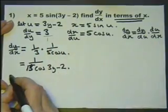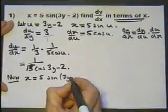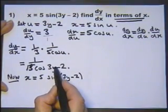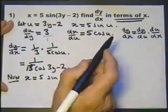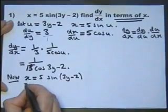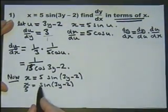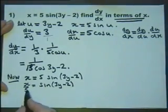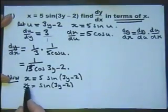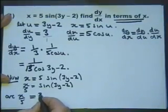We know that x equals 5 sine of 3y minus 2. We need to substitute for y something in terms of x to get our answer in terms of x — in other words we've got to make y the subject of this equation. Let's start by dividing both sides by 5. Now we need to do the inverse sine of both sides — the inverse sine of x over 5, also called arc sine. If we do the inverse sine of both sides, on this side we get arc sine of x over 5, and the inverse sine of the other side gives us 3y minus 2.